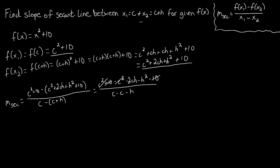In the bottom, we have the same thing with c minus c. This simplifies down nicely to give us negative 2ch minus h squared over minus h.